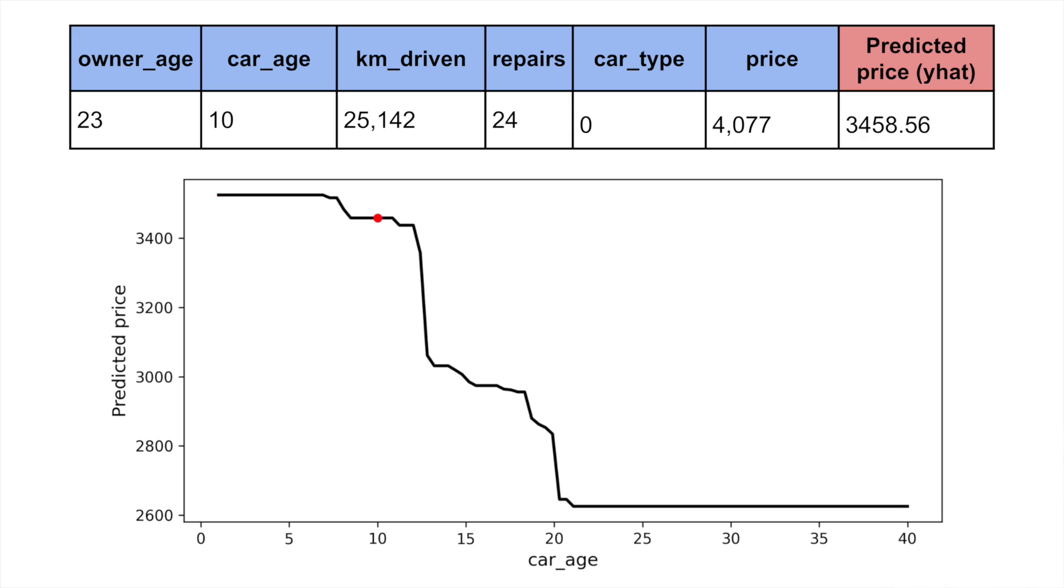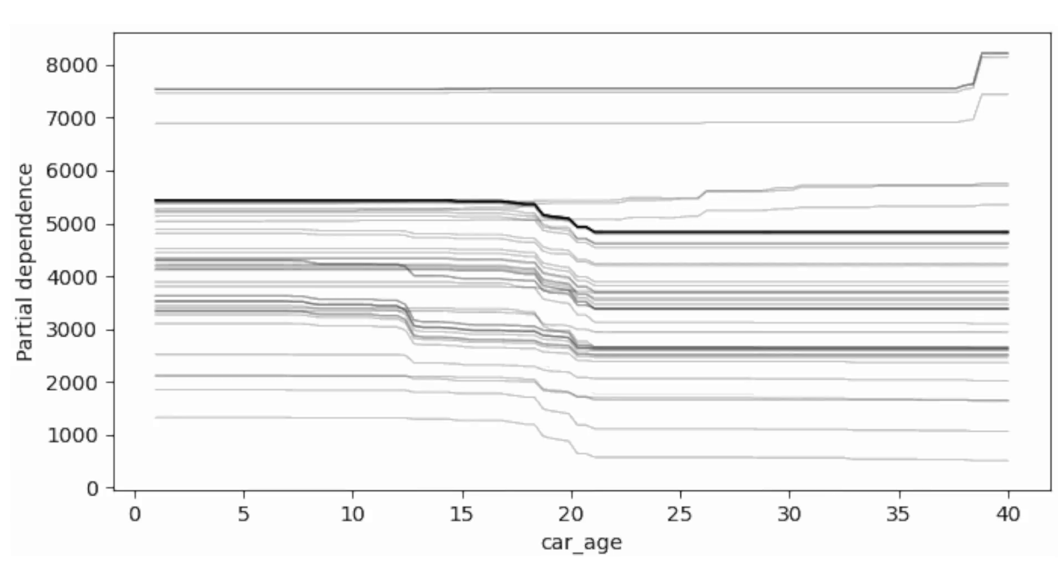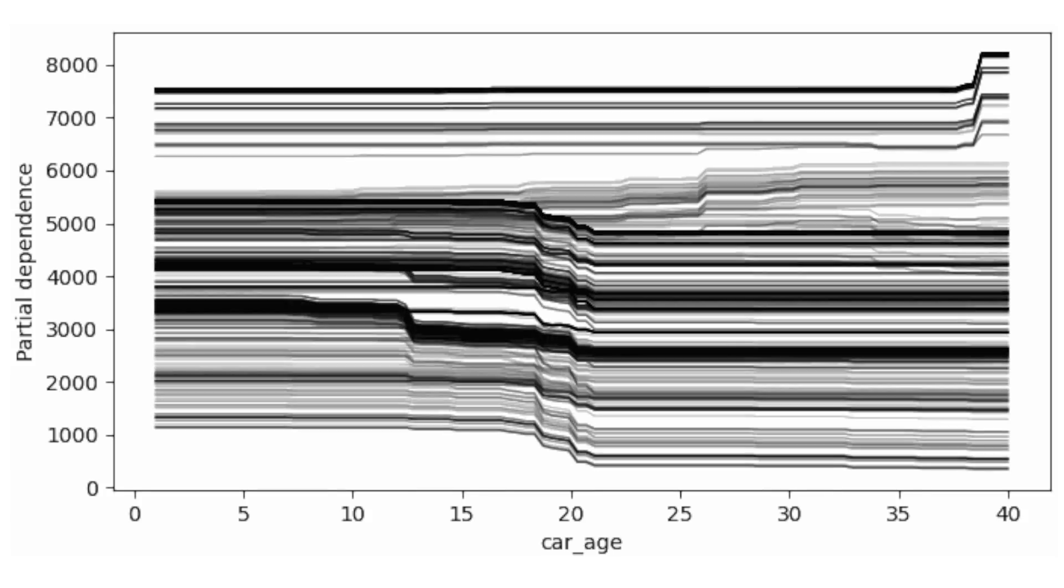Let's do this for one of the features. This line is created by varying the value of car age between its minimum and maximum value. We hold all the other feature values constant at the original values for this instance. We can see how the predicted price will change as we increase car age. Keep in mind, this is the relationship for this individual car or instance of the dataset. But we can repeat this process for every instance in our dataset.